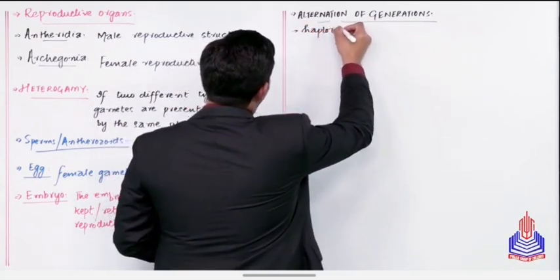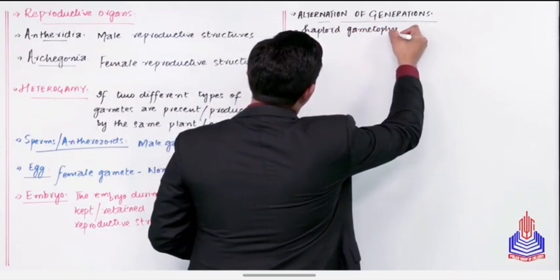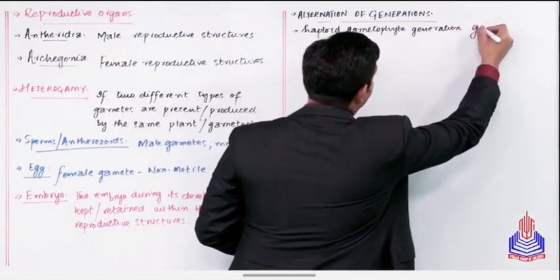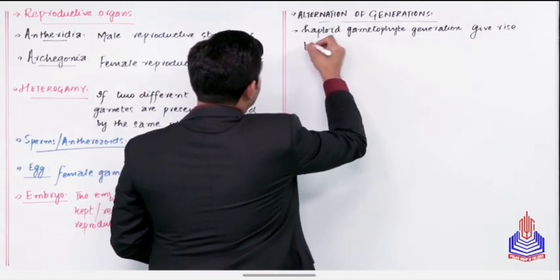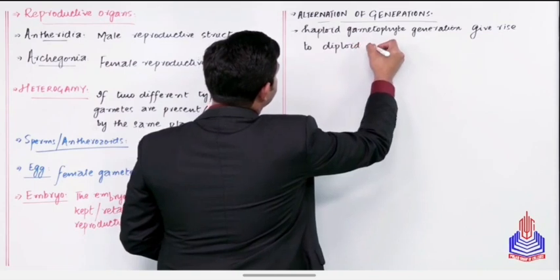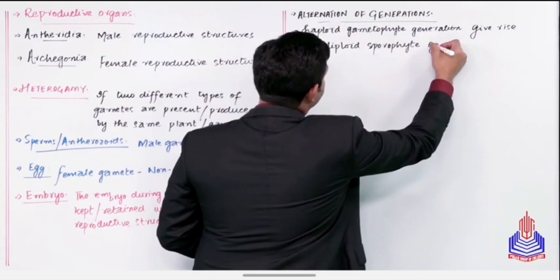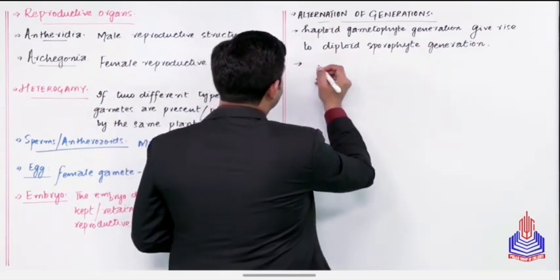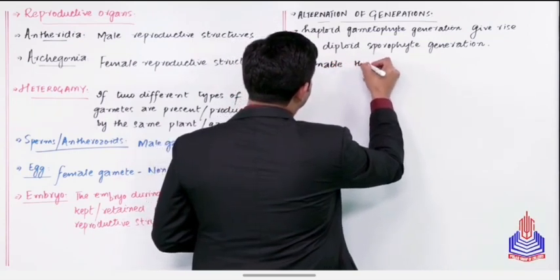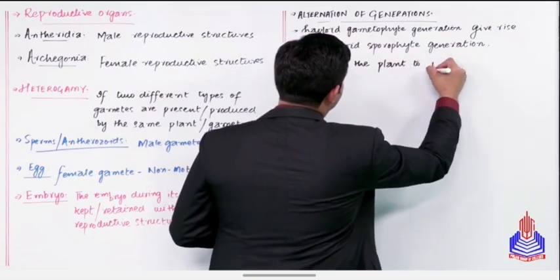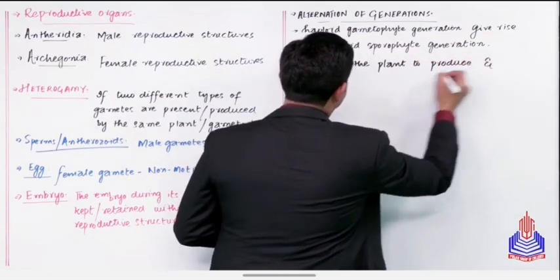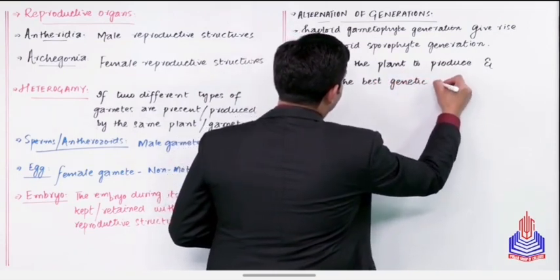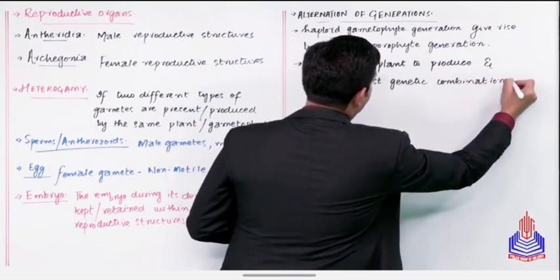All right, I'll write this point here as well. The haploid gametophyte generation gives rise to diploid sporophyte generation. This is the basic alternation of generation. And the second one is, this process enables the plant to produce and test the best genetic combinations.